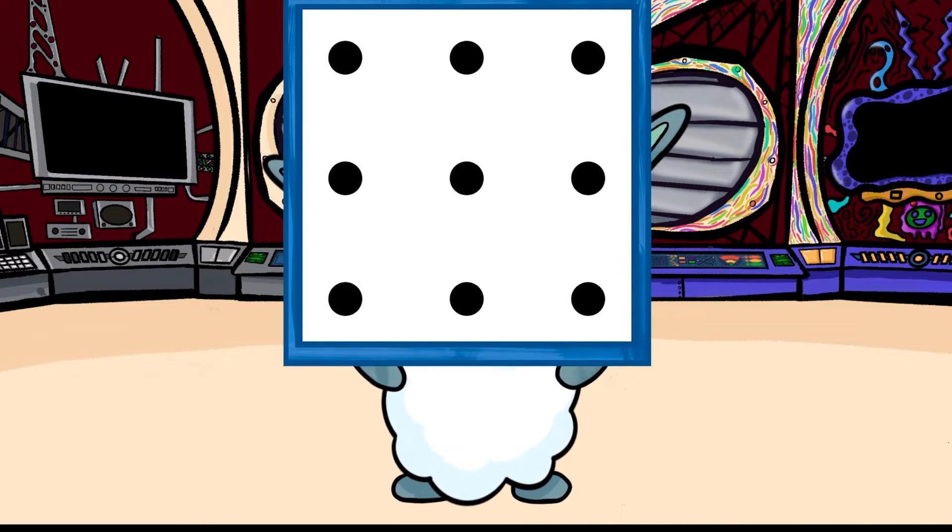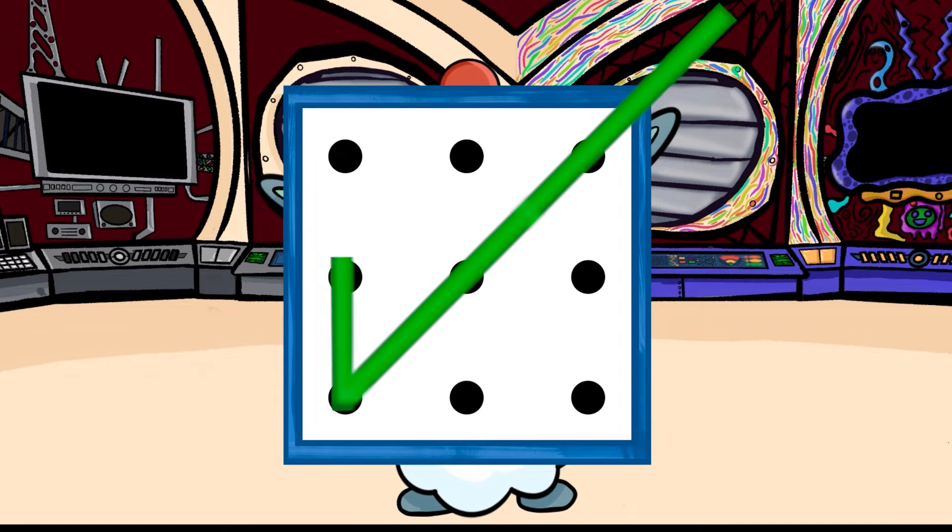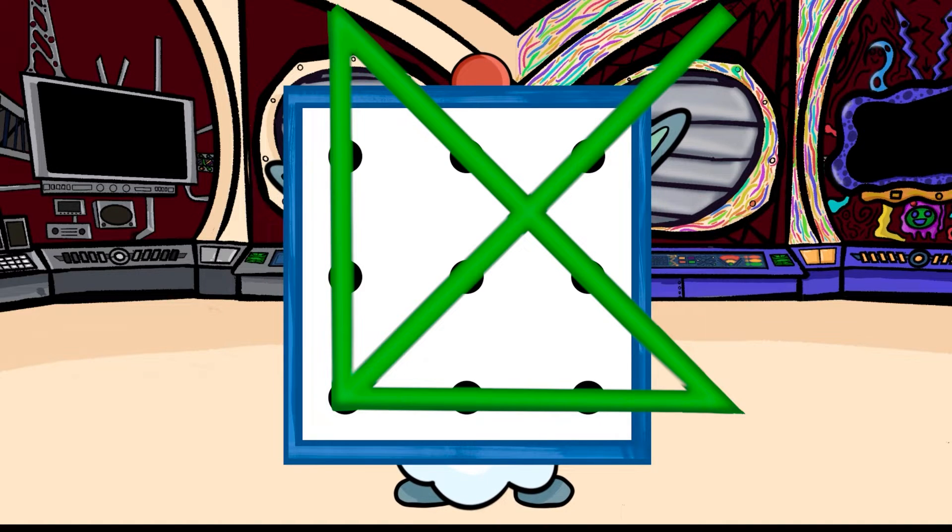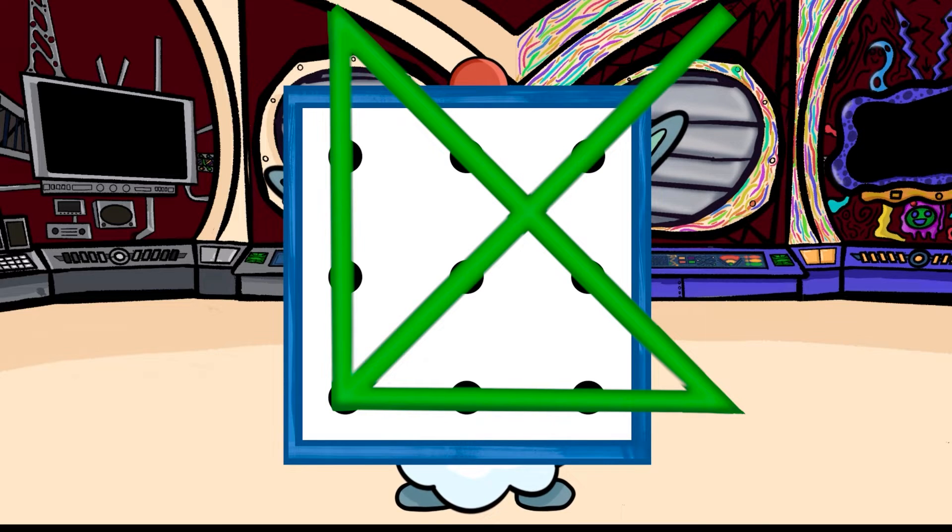Now, here is the answer. If you start in the top right corner, move diagonally downward, up once, diagonally downward the other way, and connect it back, you've successfully connected all nine dots with four lines without lifting your pen from the paper.